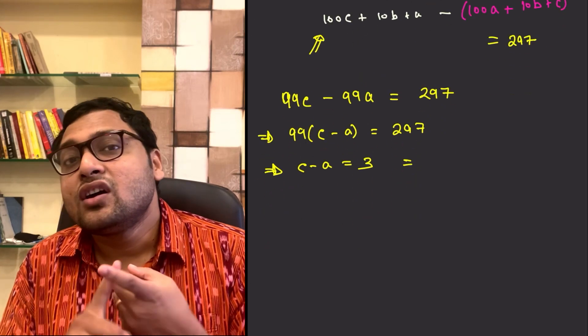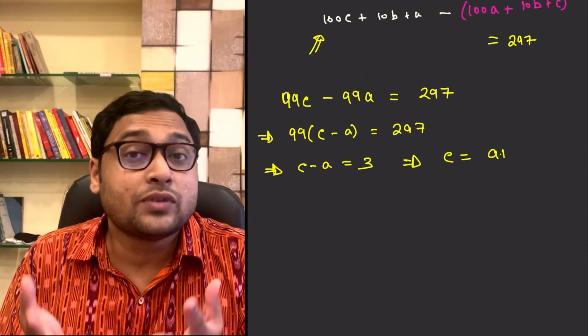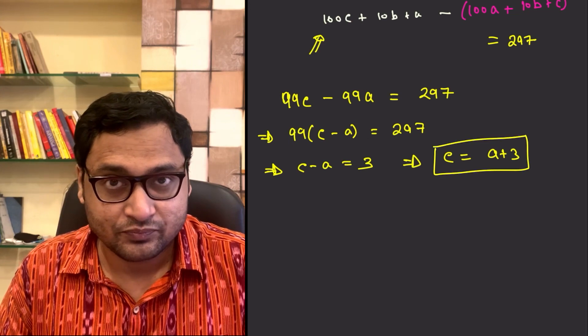So, that's the first deduction. C minus A is 3, or C is equal to A plus 3.